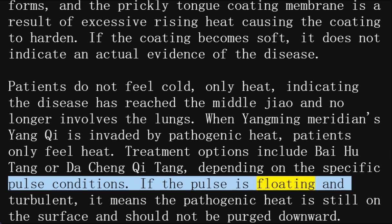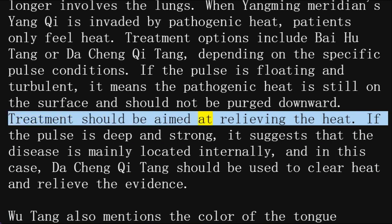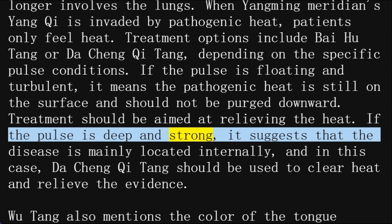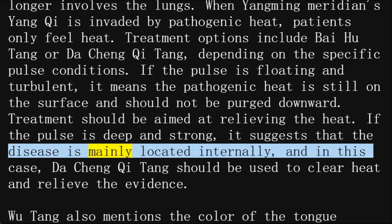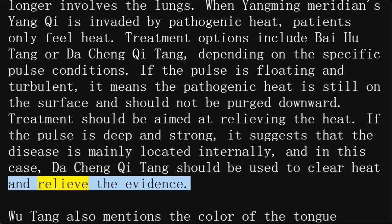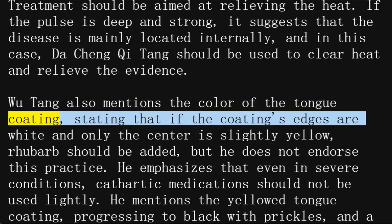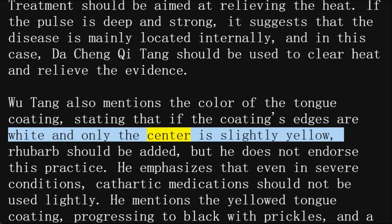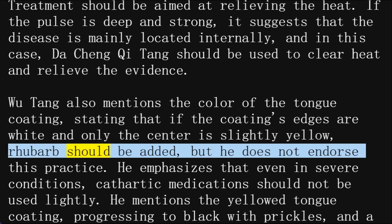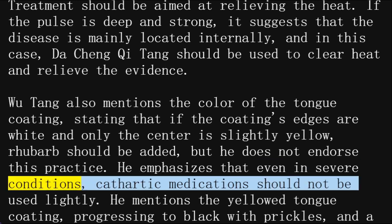If the pulse is floating and turbulent, it means the pathogenic heat is still on the surface and should not be purged downward; treatment should be aimed at relieving the heat. If the pulse is deep and strong, it suggests that the disease is mainly located internally, and in this case Da Cheng Qi Tang should be used to clear heat and relieve the evidence. Wu Tang also mentions the color of the tongue coating, stating that if the coating's edges are white and only the center is slightly yellow, rhubarb should be added, but he does not endorse this practice. He emphasizes that even in severe conditions, cathartic medications should not be used lightly.